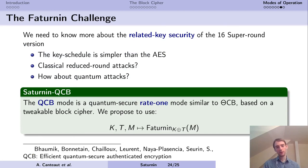We have performed a preliminary study of the realistic security of Saturnin, but we need to know more about the 16 super round version. We know it has a simpler key schedule than the AES, which may be exploited, and we want to know what are the best classical reduced round attacks and quantum attacks. Not only because we use this in Saturnin Hash, but also because in the update, we propose to use this with Saturnin QCB. The QCB mode is a quantum secure AEAD mode similar to Theta CB, but based on a tweakable block cipher. We propose to use for this tweakable block cipher Faturin in which you absorb the tweak with the key, which needs to be a completely related-key secure cipher.